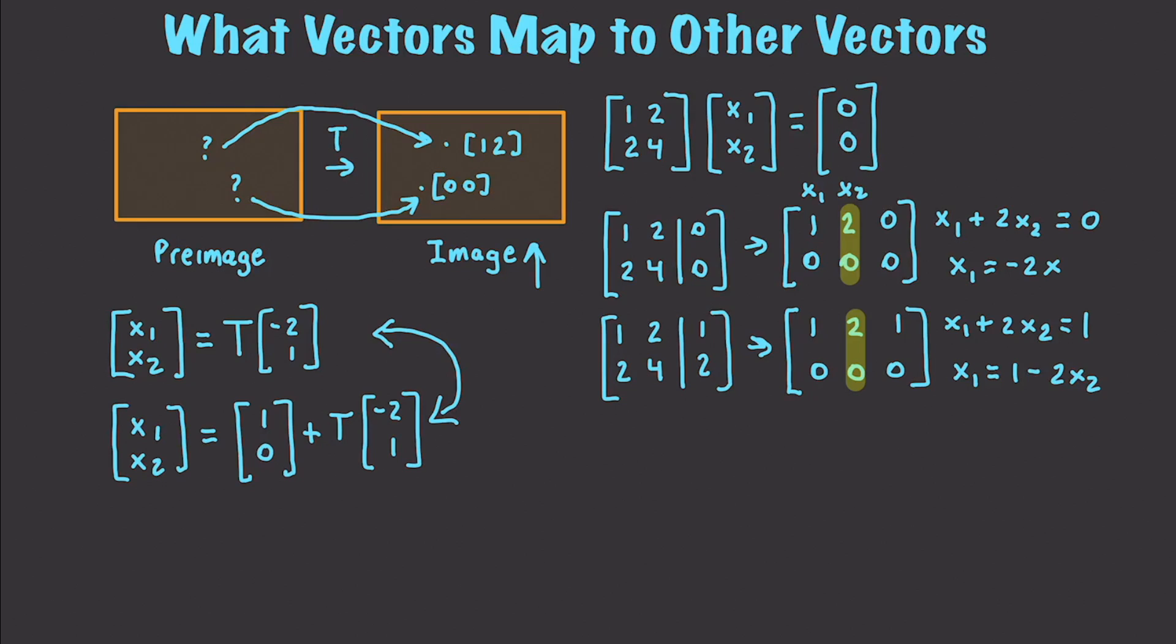And what this tells us is the pre-image of the two vectors are going to be all vectors that satisfy these two equations right here. Okay, so there you go. Introduction to... oh, and another thing is that this guy right here actually has a special name. It's called the kernel, and basically it is going to represent all transformations that result in the null vector.